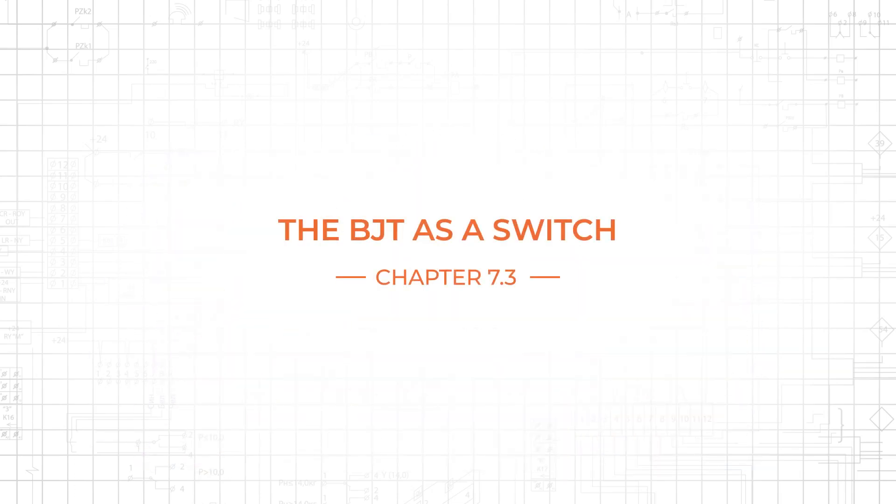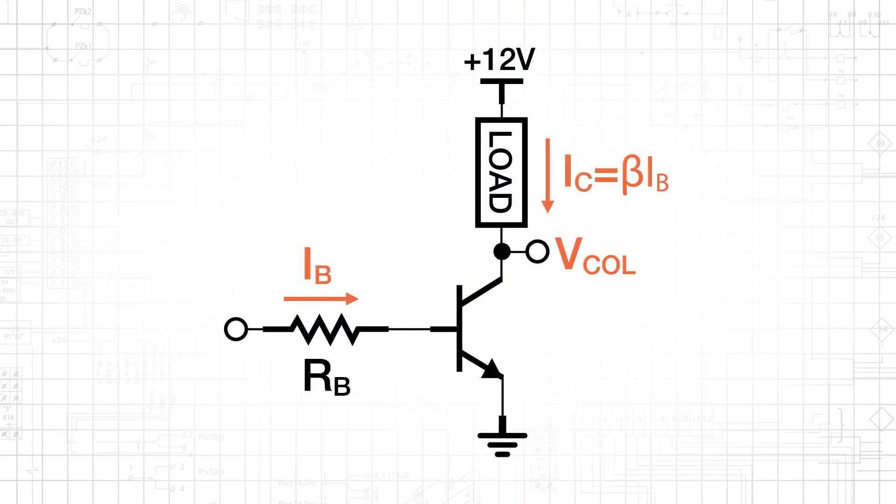Electronic systems are often responsible for controlling motors, solenoids, heaters, and other types of high-power equipment. The thing being controlled is called the load, and we control it by turning it on and off.